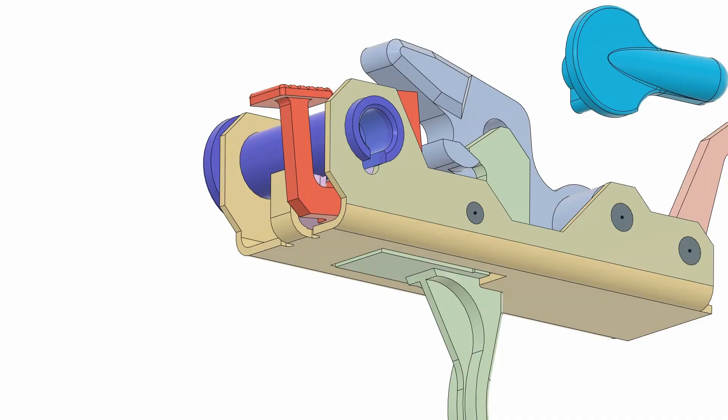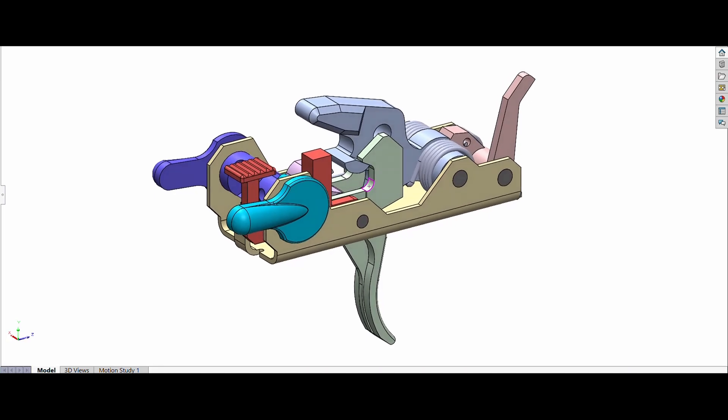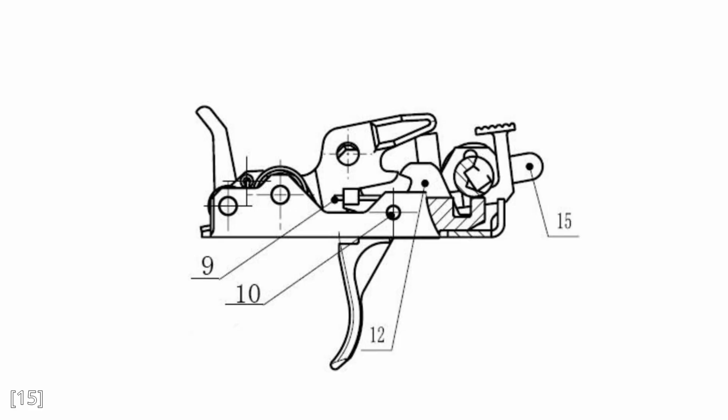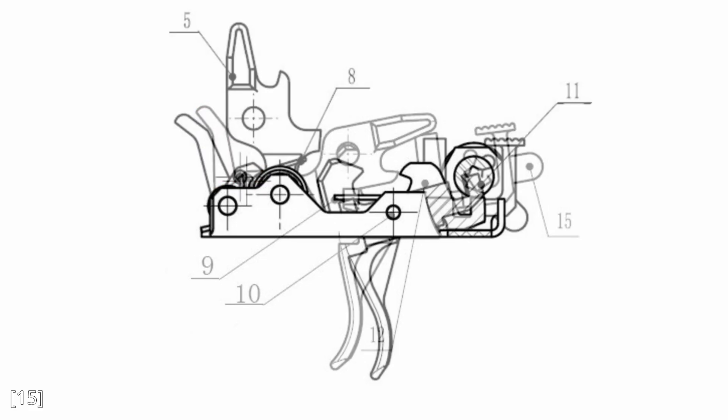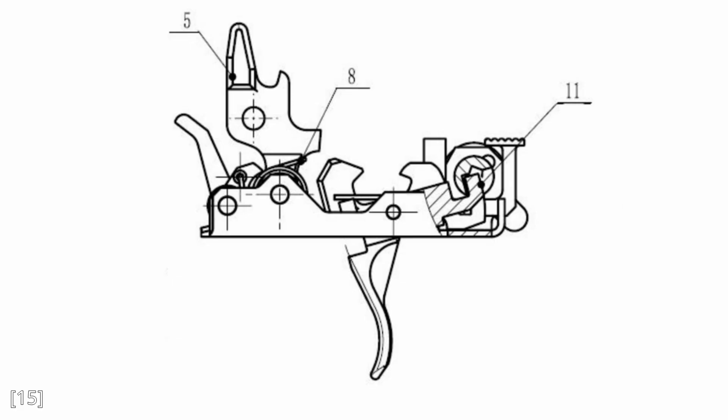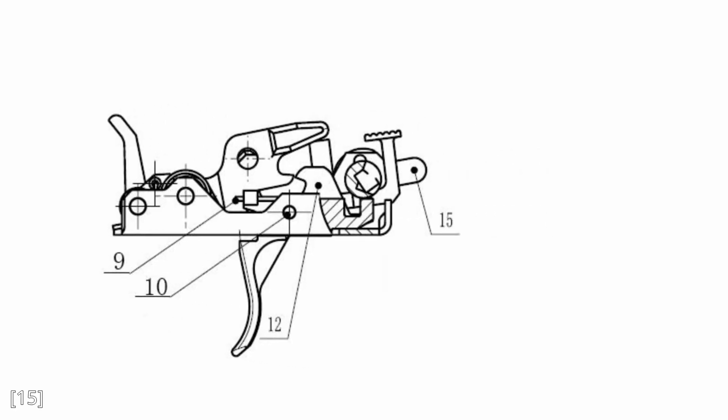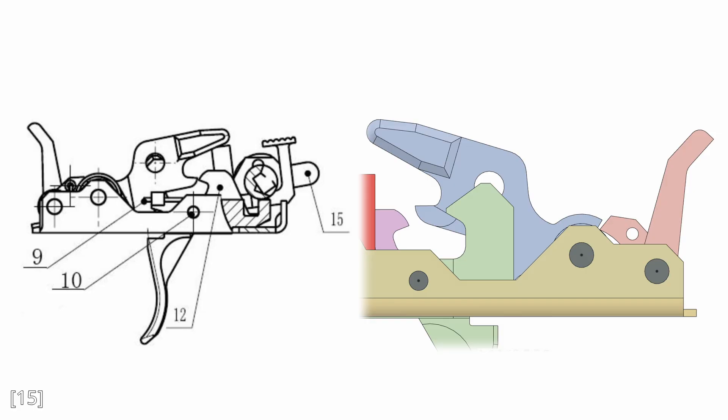Alright, now it's the interesting part. In my last video, I modeled the QBZ-191 trigger pack based on this patent document, specifically this figure. Note the position of the auto sear. It is in the way of the hammer as opposed to in this other figure, where it is moved forward and out of the way of the hammer. When I modeled the fire control group, I assumed that in this diagram, the hammer is being held back by the trigger hook. So as you can see on the model, the trigger hook is in contact with the hammer's stud.